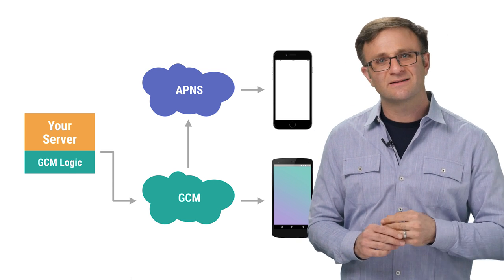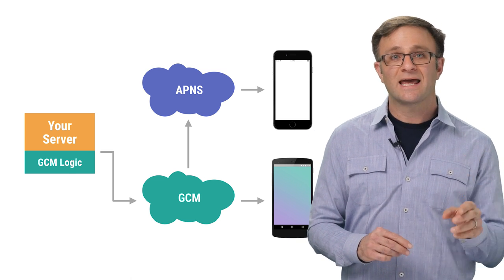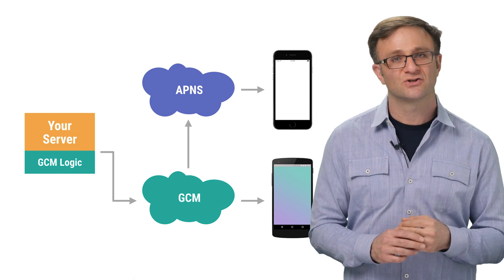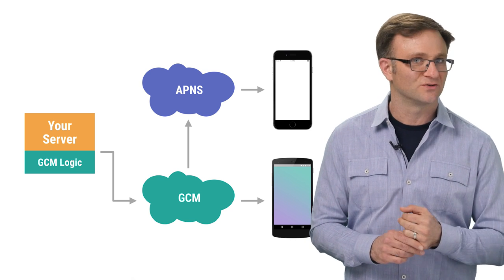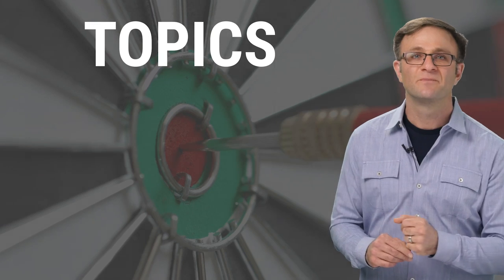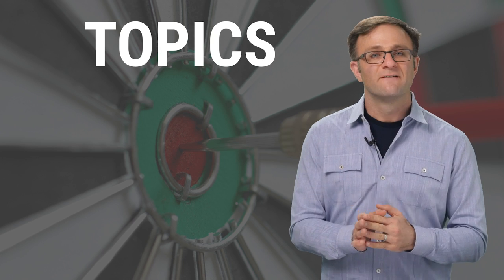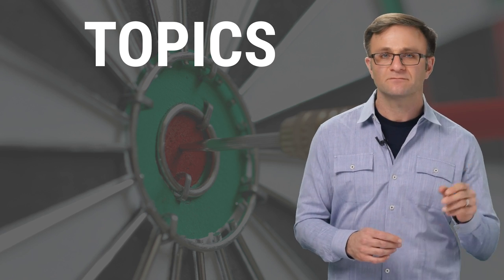But it's not just about using less code. By using GCM to handle your messaging for you, you can take advantage of some of the other nice features that GCM offers to developers, like topics. Topics allow your app to subscribe to notifications about any particular topic that you or your users want to. For example, let's say you've got a weather app, and I, as a loyal weather fan, want to be notified whenever there's extreme weather happening in my zip code.